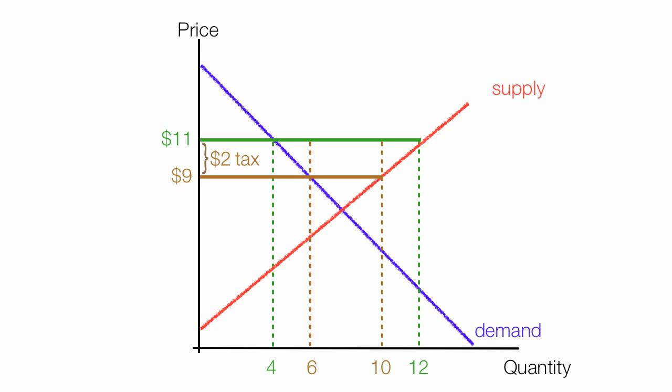Now we can calculate all the areas. The gain in consumer surplus is this rectangle and that triangle, and we calculate the area of the rectangle plus the area of the triangle. This is the increase in consumer surplus after the tax.